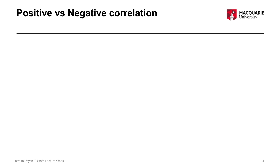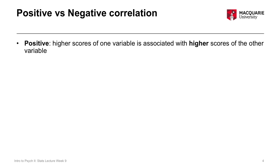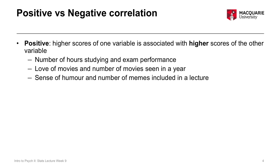Those previous examples were all examples of a positive correlation. Correlations can be either positive or negative. A positive correlation means that higher scores on one variable are associated with higher scores on the other variable — greater value on one variable goes along with greater value on the other. So higher goes with higher and lower goes with lower. For example, a higher number of hours studying goes with higher exam performance, just as fewer hours studying goes with lower exam performance.